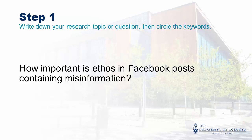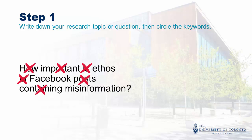Once we've written down our question, we'll circle our keywords. It's very important to remember that not every word in our question is a keyword — if we type the whole question into a search box, the results will be unstructured and confusing. In our example, the words how, important, is, in, and containing are not good keywords, because they don't get at the concepts in our question.